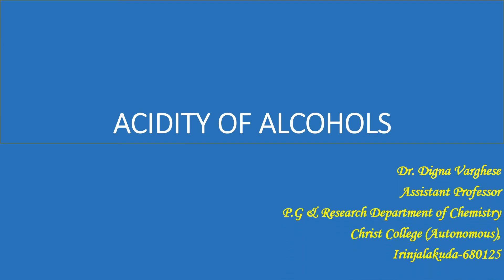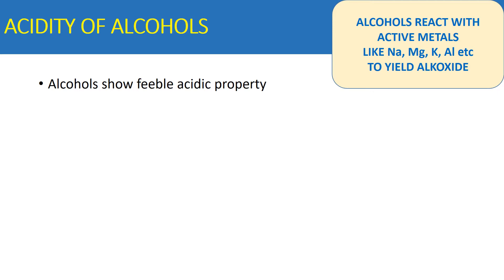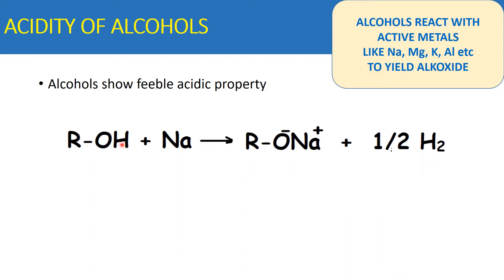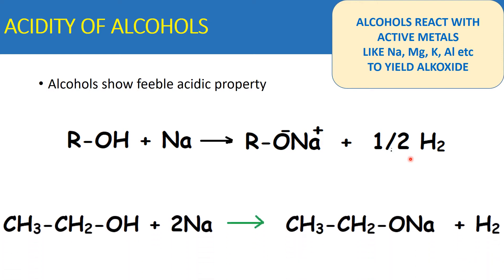Today we are discussing the acidity of alcohols. I'm Dr. Digni Varghis. Alcohols show feeble acidic property, illustrated by the fact that alcohols react with active metals like sodium, magnesium, potassium, aluminum, etc., to yield alkoxides. Here you can see an example: alcohol reacts with sodium metal to form sodium alkoxide and hydrogen.